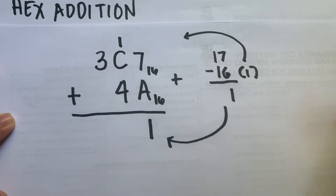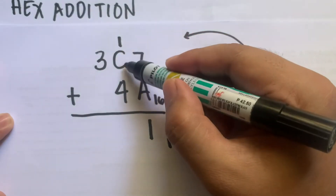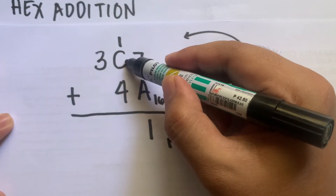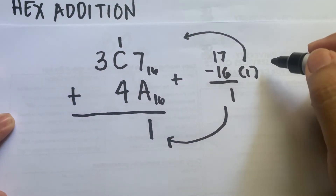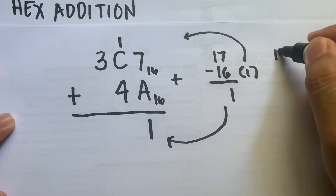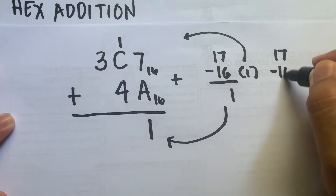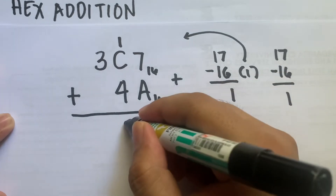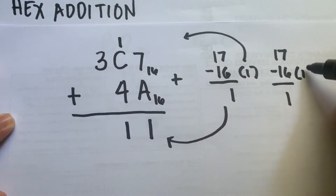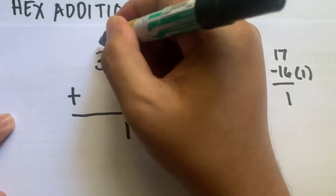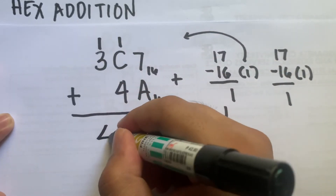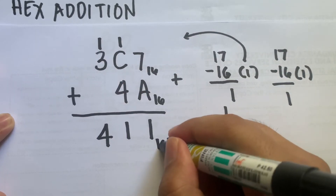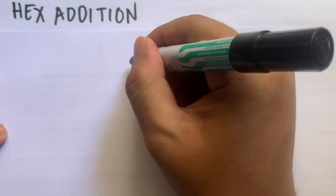Next, we have 1 plus C, which is 1 plus 12, equals 13; plus 4 is again 17. Since 17 is invalid, we subtract 16 again, giving 1. We put 1 here and carry 1. Then we add 1 plus 3, which is 4. So the answer is 4, 1, 1.